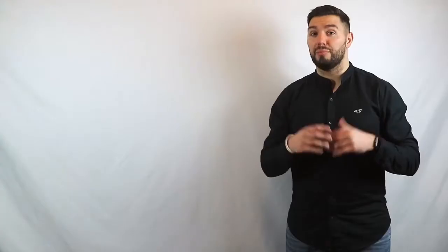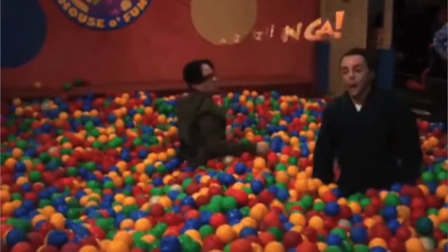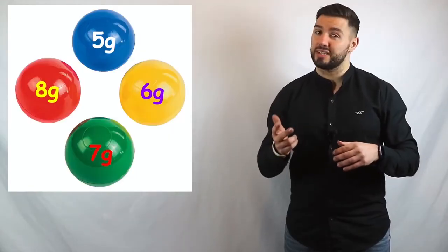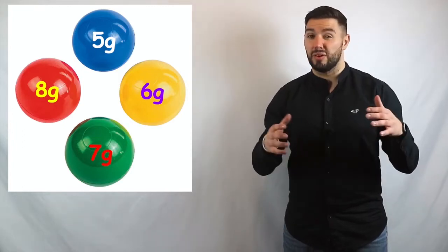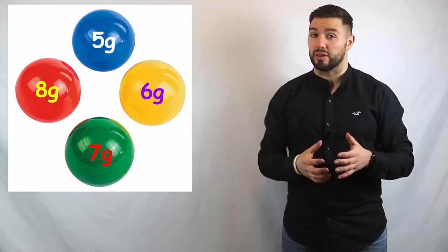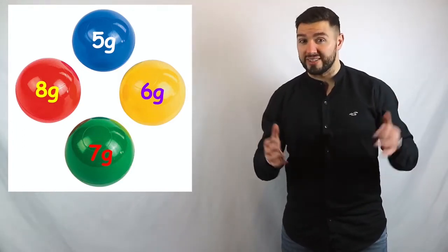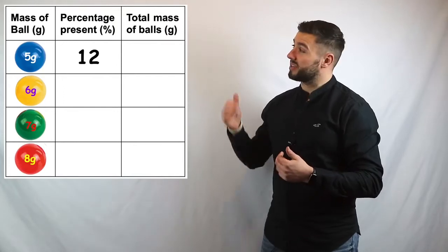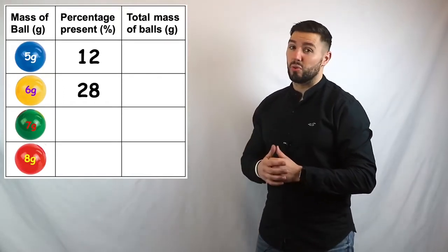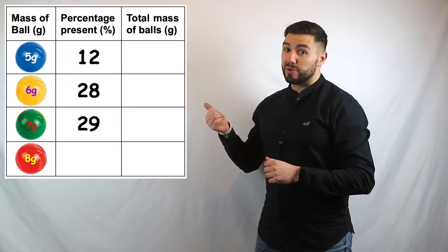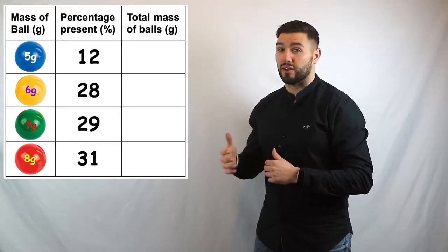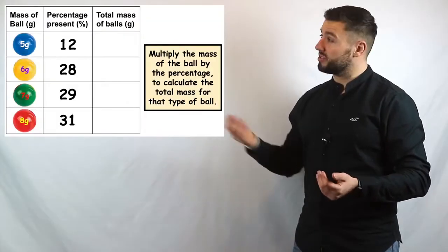Let's try another example. Imagine I had a thousand different balls with four different weights that they could potentially be. They could be either 5 grams, 6 grams, 7 grams, or 8 grams. If I wanted to find the average mass of a ball inside in that group, then I need to know the percentages present of each of those different masses. So, let's take this table as an example. 12% of the balls weigh 5 grams, 28% of the balls weigh 6 grams, 29% of the balls weigh 7 grams, and 31% weigh 8 grams. Let's try and calculate the average mass of the balls.